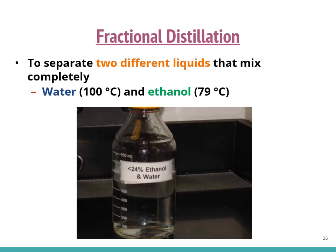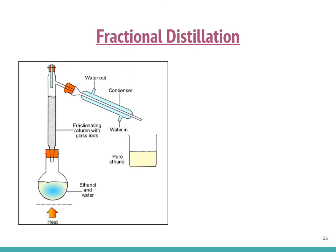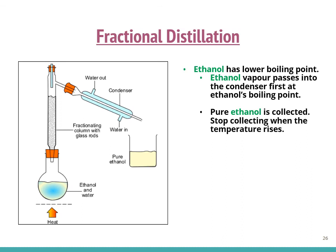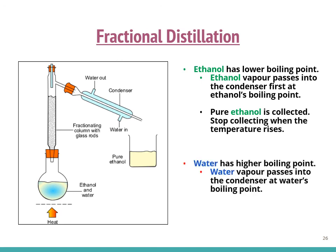The last technique is fractional distillation, which is used to separate two different liquids that mix completely but have different boiling points. For example, water has a boiling point of 100°C and ethanol has a boiling point of 79°C. To separate a mixture of ethanol and water, we heat the solution first. Because ethanol has the lower boiling point, ethanol vapor passes into the condenser first and pure ethanol is collected. We stop collecting when the temperature rises. Water vapor then passes into the condenser at water's boiling point and water is collected in a separate beaker.